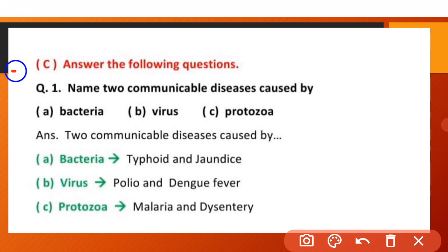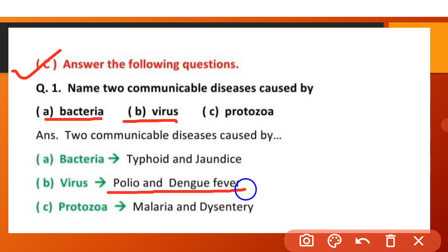Part C: Name two communicable diseases caused by: (a) bacteria — Typhoid and Jaundice; (b) virus — Polio and Dengue fever; (c) protozoa — Malaria and Dysentery.